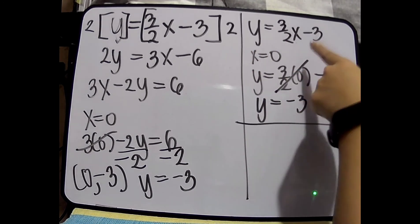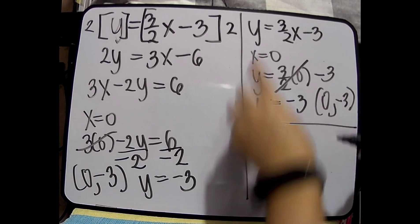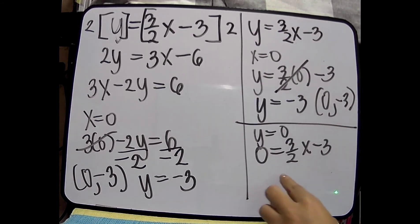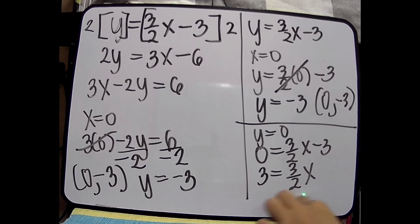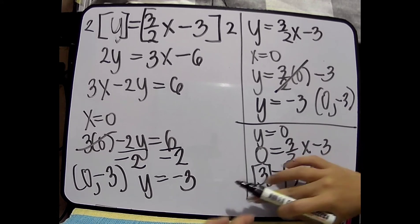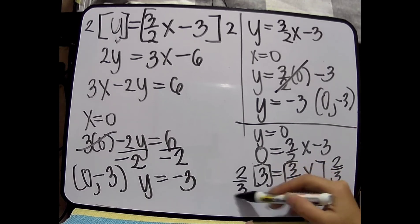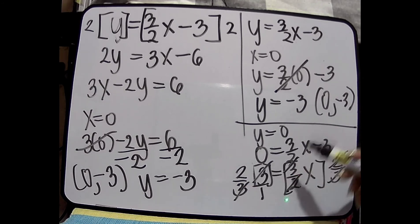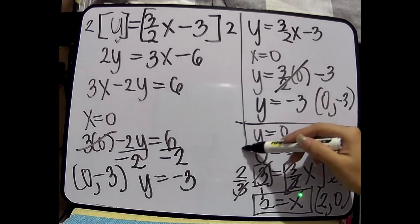Pakita ko na lang din, ito muna. So, y is equals to 0. So, 0 is equals to 3/2 x minus 3. And then, I will be transposing this to the other side. So, magiging positive 3 is equals to 3/2 x. And then, para maiwan yung x, multiplication property of equality — we will be multiplying both sides by the reciprocal nito kasi fraction. So, 2/3 — para nga maiwan yung variable natin. So, dahil 3 over 3 cancel, so we have 2. So, 2 is equals to x. So, ang ating ordered pair ay (2, 0) — yung 2 yung nakuhang value for x, yung 0 yung sinubstitute natin.